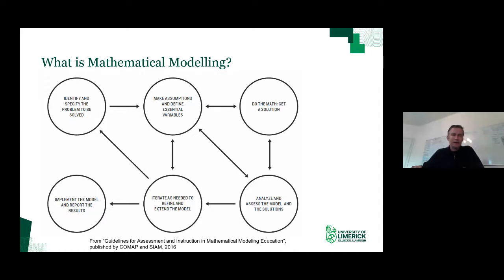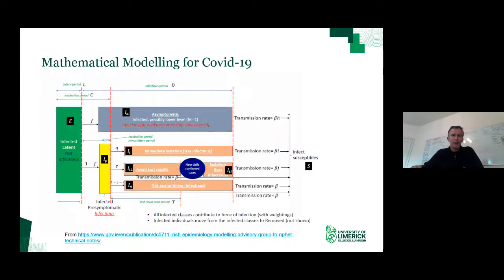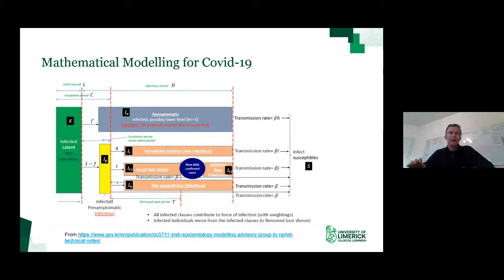An important part of modeling is that collaborative and communication aspect, where you're able to talk to people who are not mathematicians and explain results that come out in mathematical language, translating them back to the language of the real world scenario. I thought I'd give you a quick view of some of the things we're doing on the national COVID-19 modeling group, to give a flavor of how all these things pull together in a very obviously important and urgent real world problem.